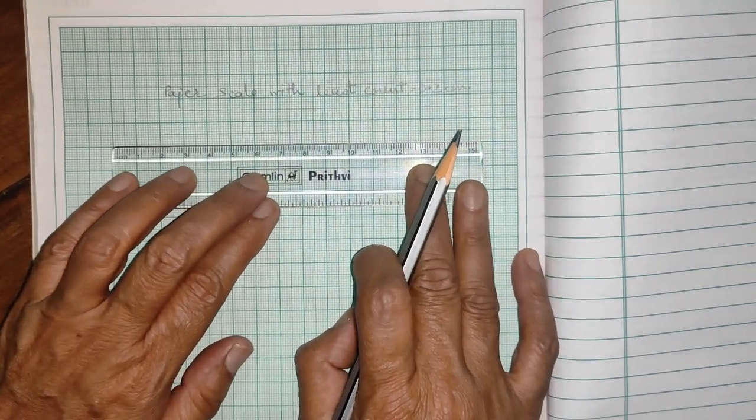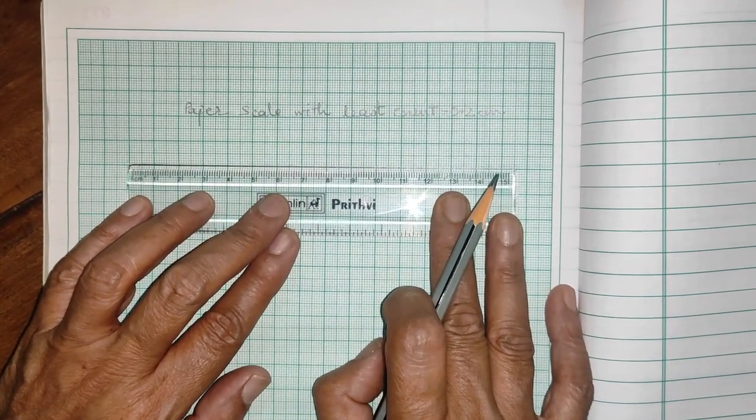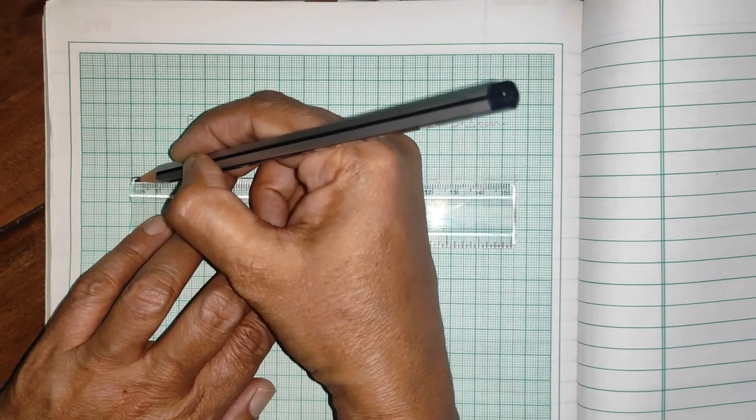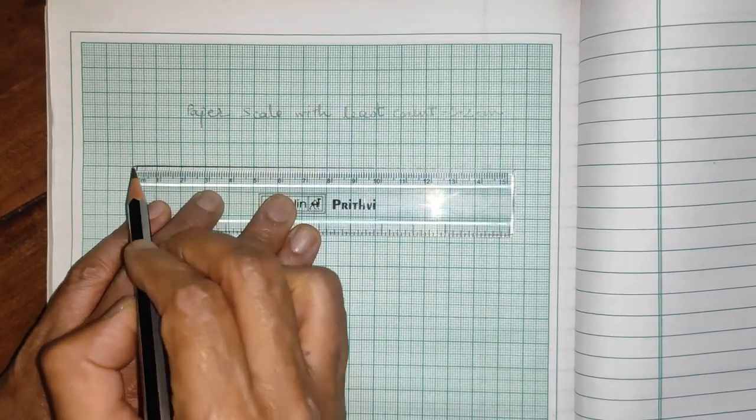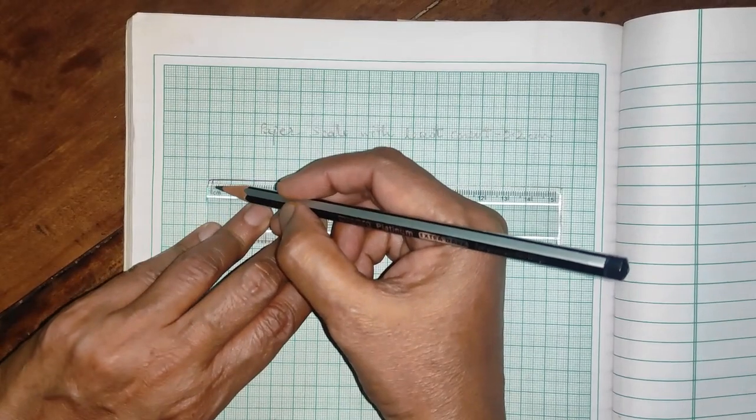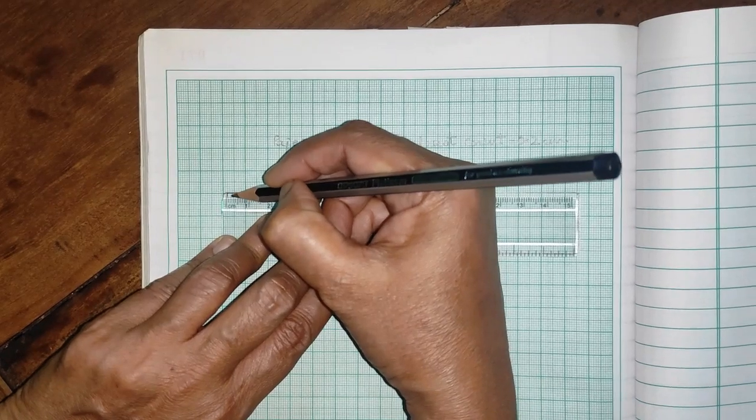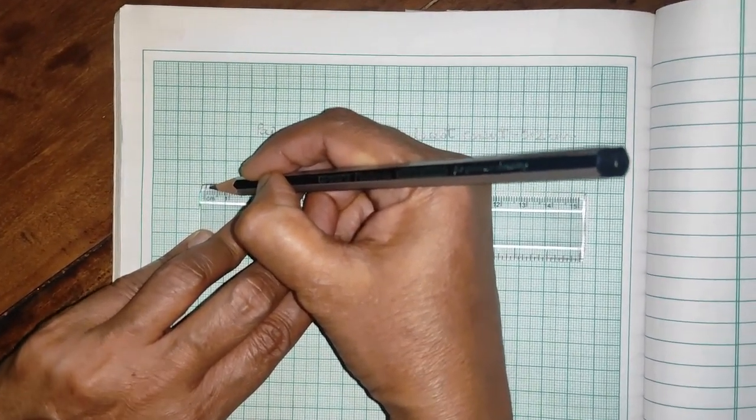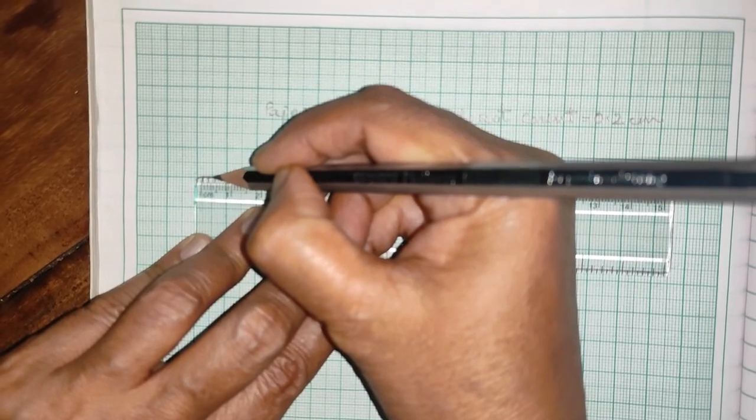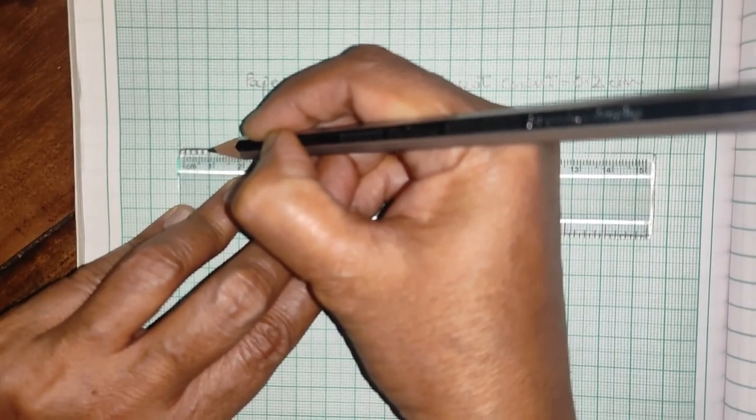Now, just pull the scale little downwards without disturbing the end positions and start marking. This is 0 position on the scale. Then, I need the least count 0.2 cm, right? So I will not mark on 0.1 cm. I will directly mark on 0.2 because my least what I can measure on this scale should be 0.2 cm. Then, it will be 0.4, then 0.6, 0.5 cannot be marked, right? 0.8, alright?